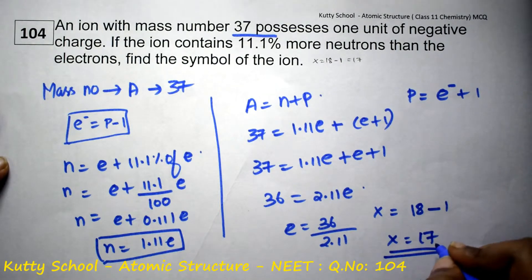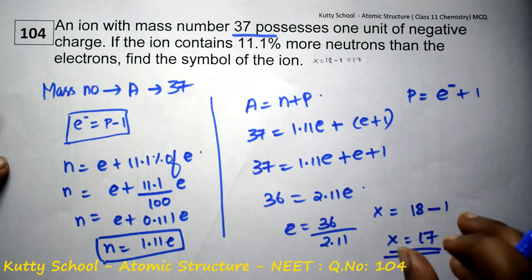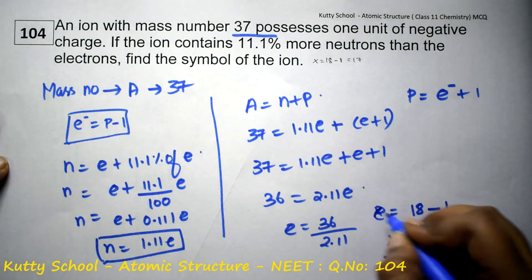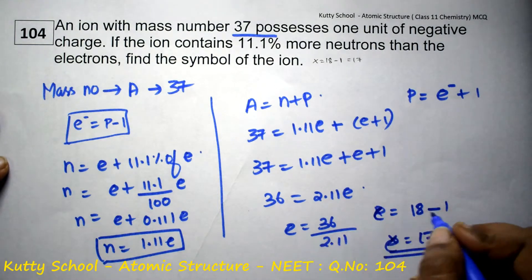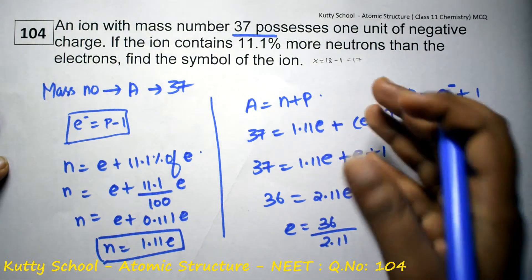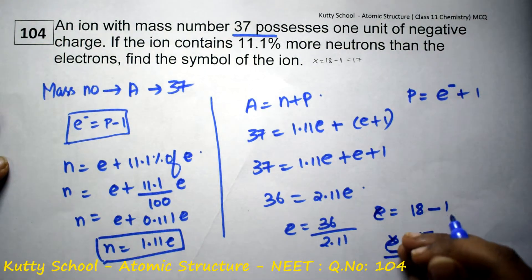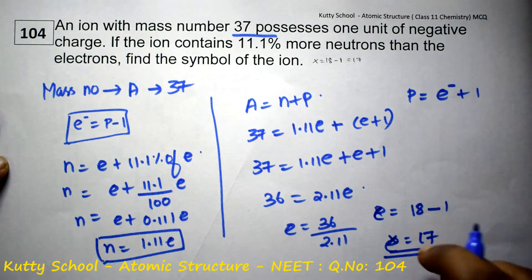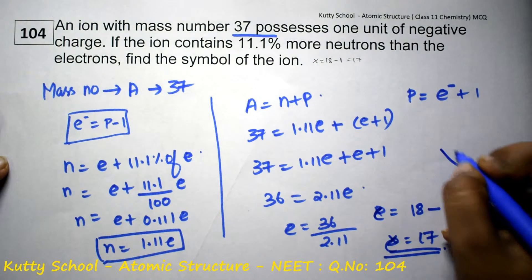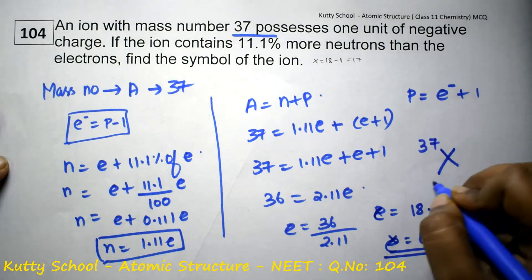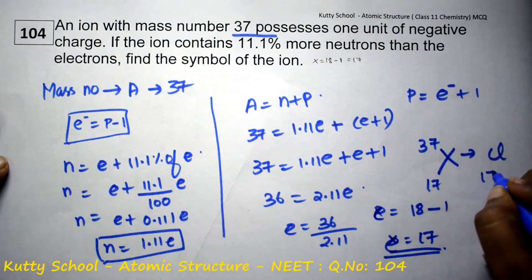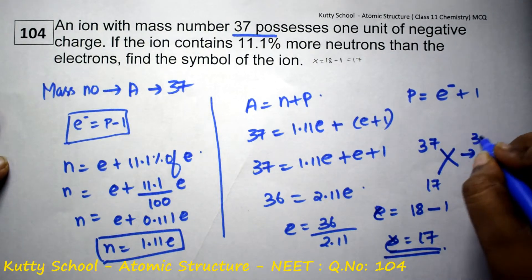The atomic number is 17, and the number of protons is 17. In a neutral atom, number of electrons equals number of protons, giving the atomic number. The mass number is 37. So the symbol is X with atomic number 17 and mass number 37 — this is chlorine, Cl-37.